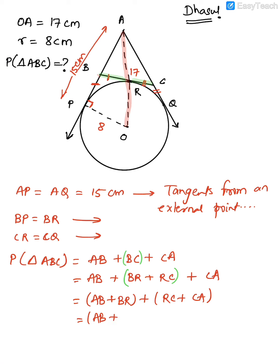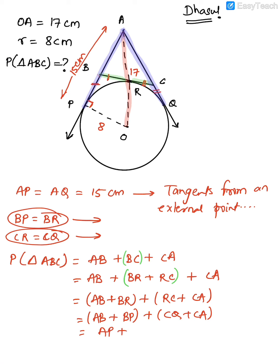Now replace: BR = BP and RC = CQ. So (AB + BP) = AP, and (CQ + CA) = AQ. Since AP = AQ = 15 cm, the perimeter = AP + AQ = 15 + 15 = 30 cm.